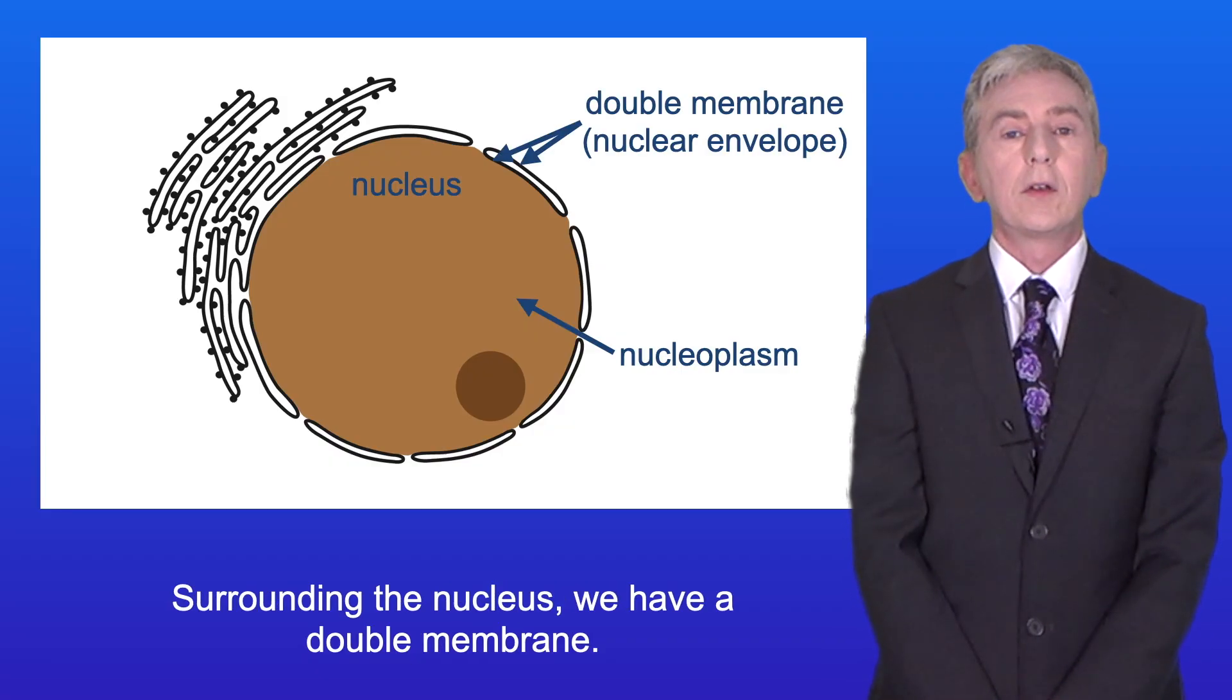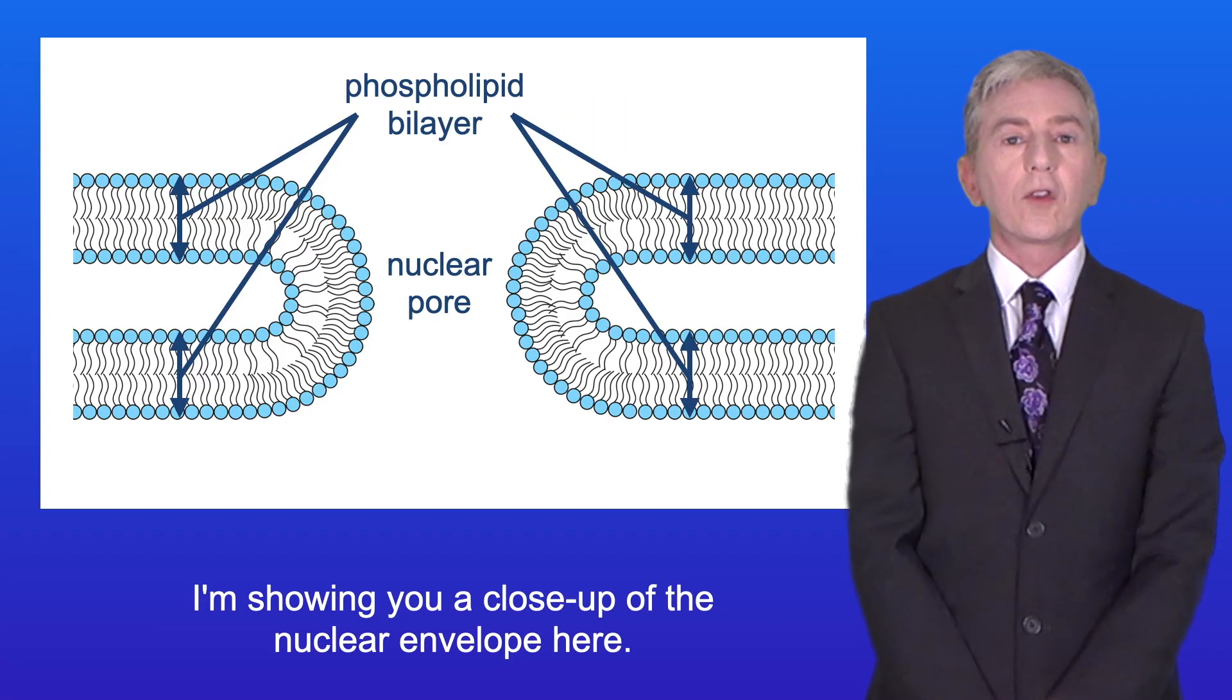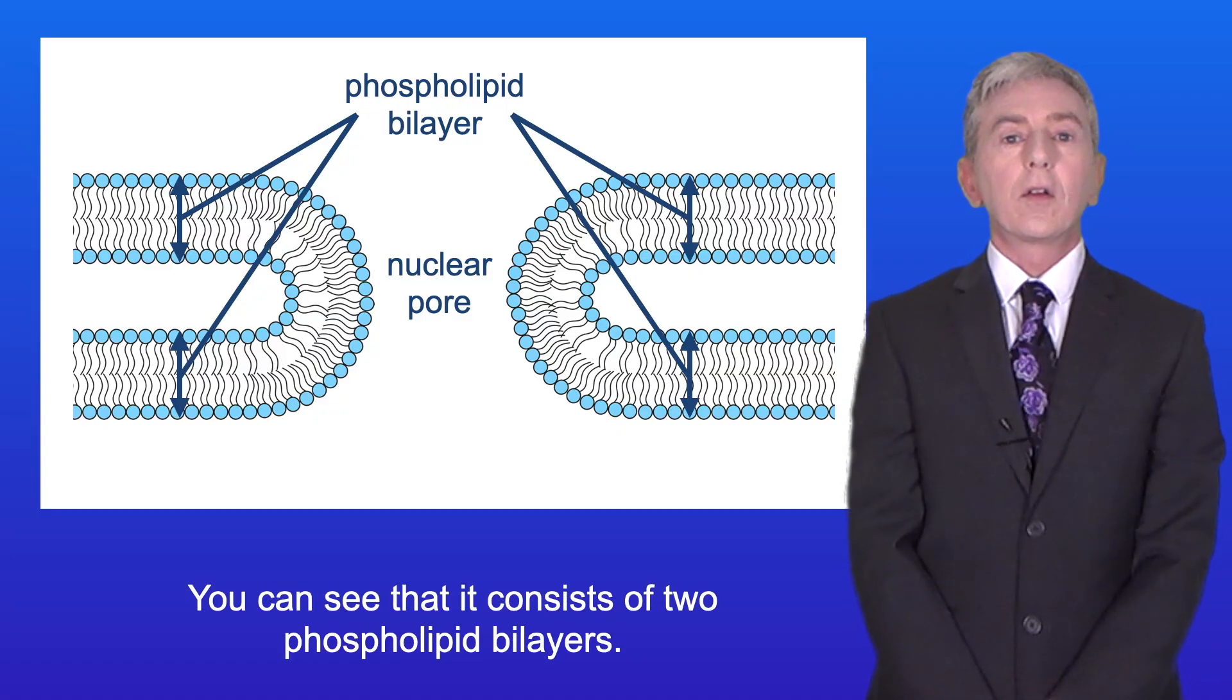Surrounding the nucleus we have a double membrane. Scientists call this the nuclear envelope. I'm showing you a close-up of the nuclear envelope here and you can see that it consists of two phospholipid bilayers.